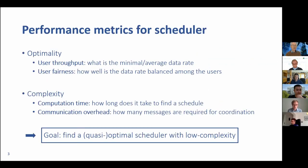If we're talking about a protocol, then we're talking about performance metrics. In performance metrics for such a scheduler, what is important is first the optimality: how good does our schedule work in terms of the user throughput and also the user fairness. With user fairness, we aim to deal with how the data rate is balanced among the different users.